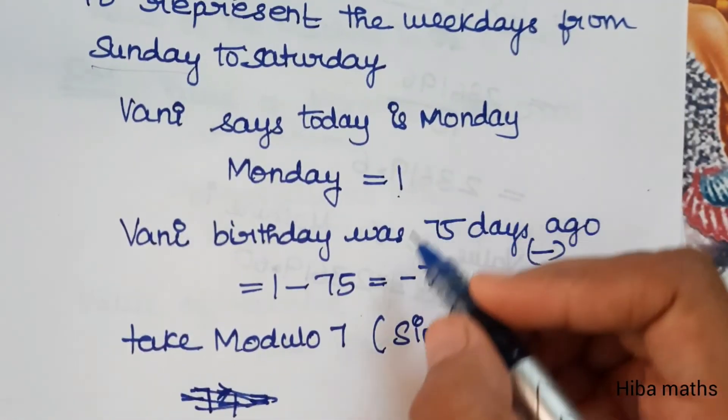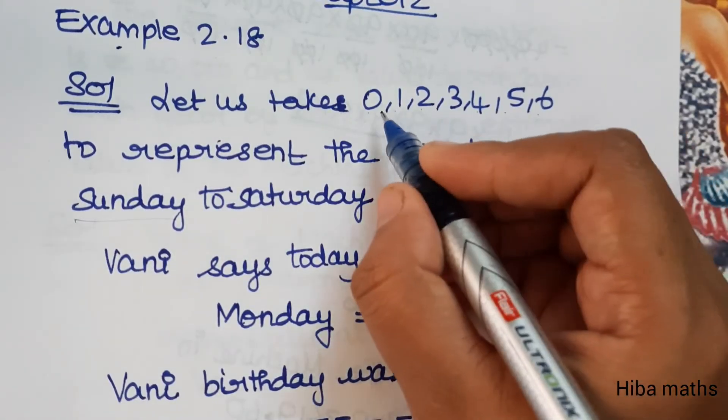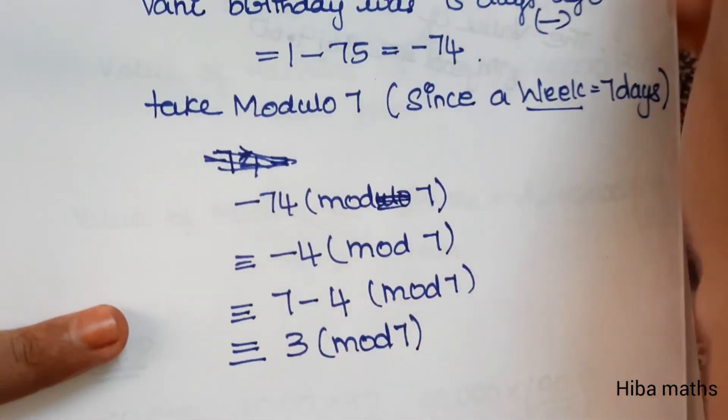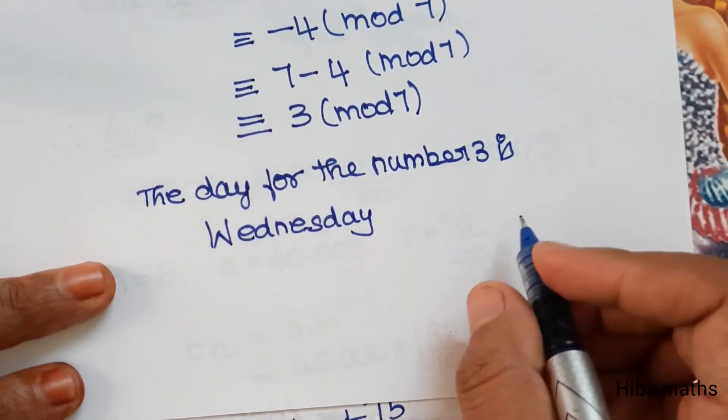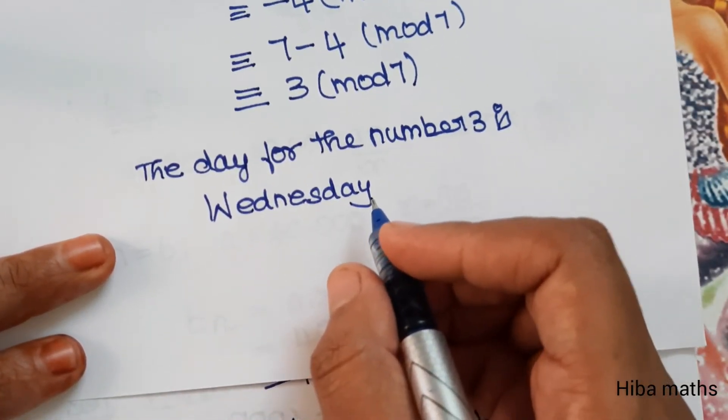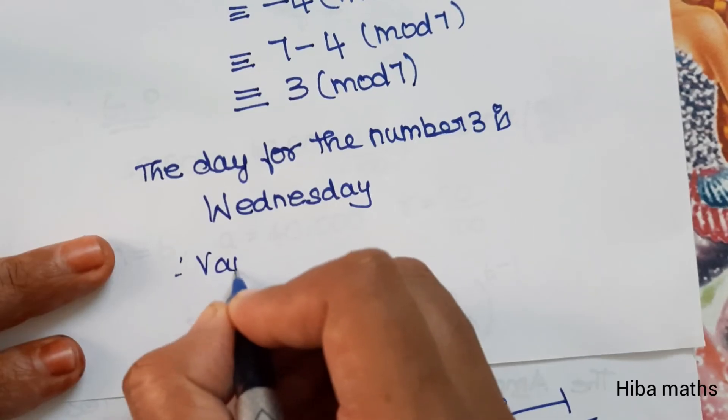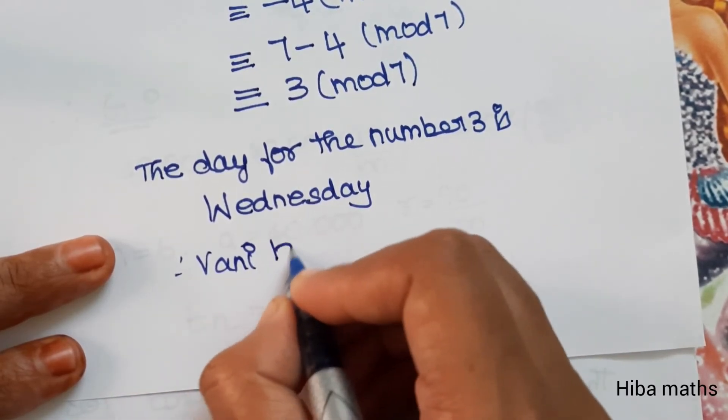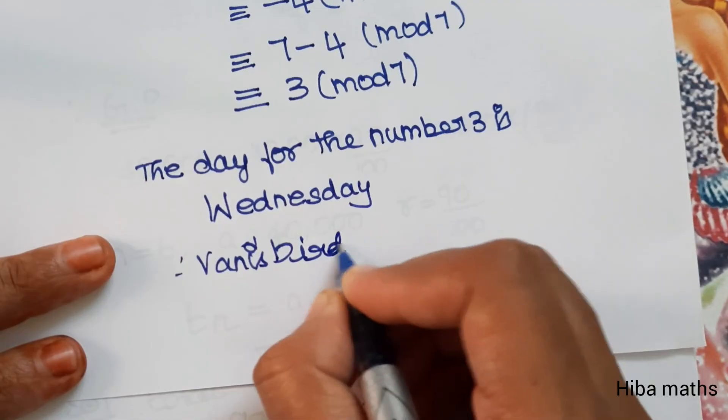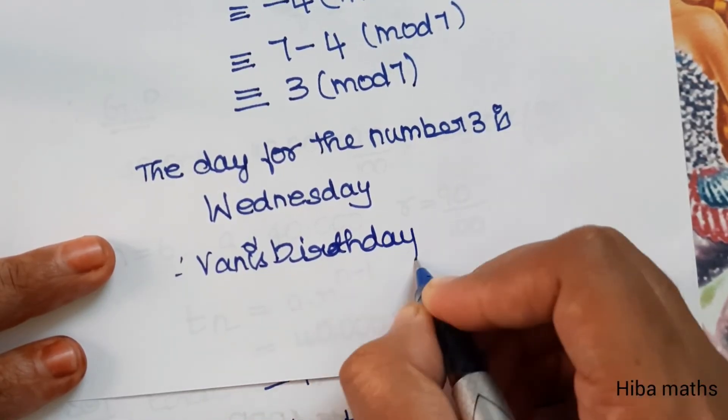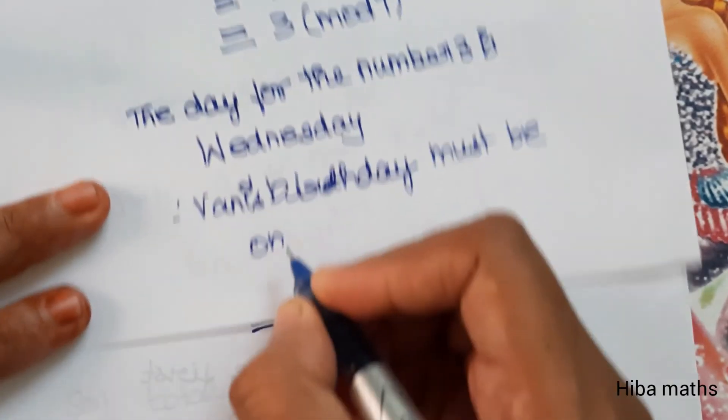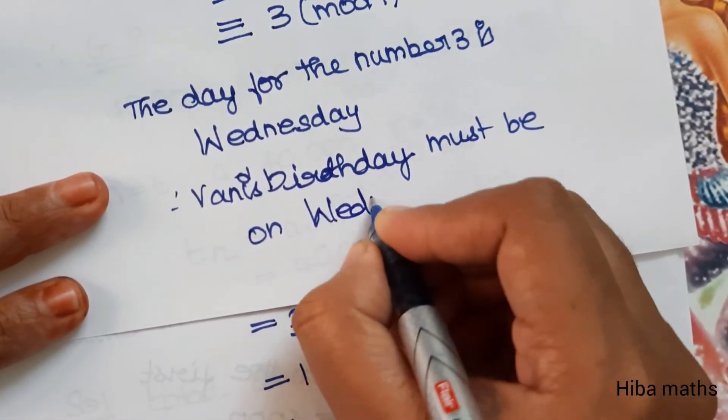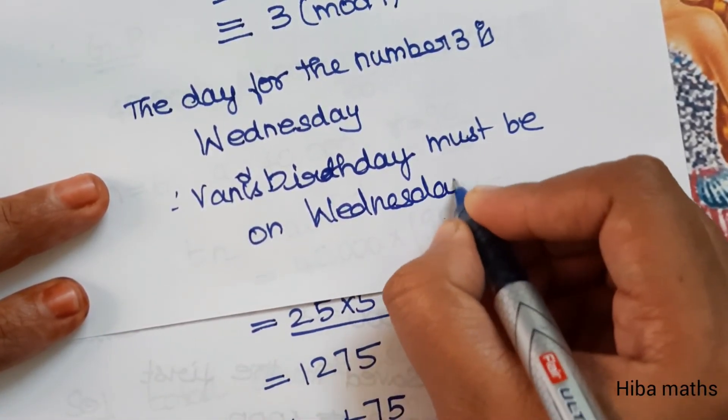Number 3 represents Wednesday. So the day for number 3 is Wednesday. Therefore, Vani's birthday must be on Wednesday.